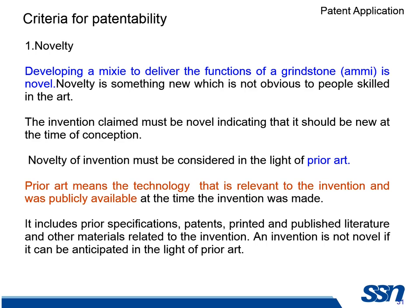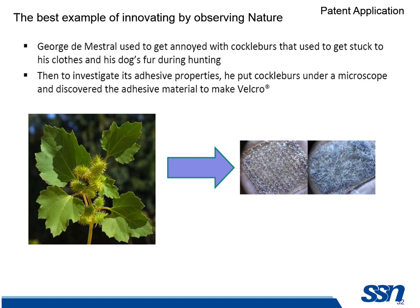What is novelty? Imagine a mixie delivering the functions of a grindstone — an Ammi — in the olden days. If I had asked somebody to mechanize the Ammi, they would have only added robotic arms to do the same activity. But by a totally different activity of a rotating knife, we are able to produce the same product. This is called novel. The person using the Ammi would never have known that a rotating knife can do the same thing — that's what is called non-obviousness. The previous technology is called 'prior art,' meaning the technology actually existing now in the area of invention.